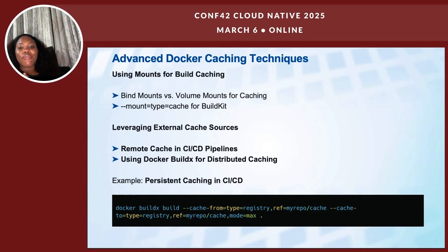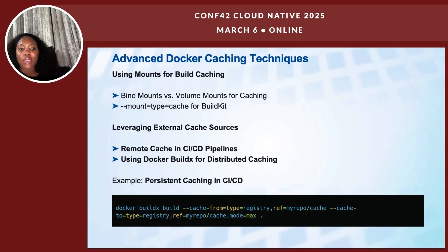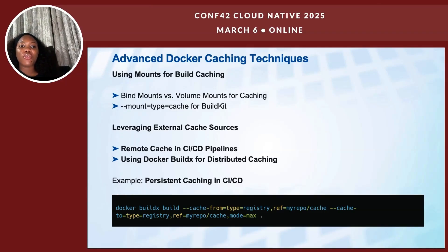You can also leverage external cache sources. Docker has BuildX for distributed caching, which allows caching to be stored and shared across multiple platforms and environments. The code example shows how to store build cache in a registry so every new build can reuse it. This ensures the build reuses cached layers, making them much faster — especially useful in a CI/CD environment.